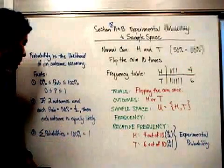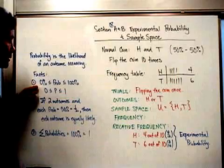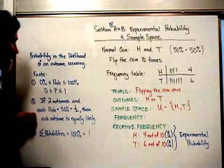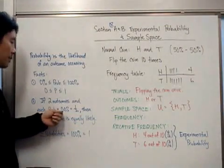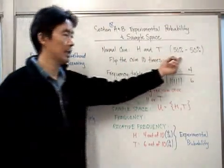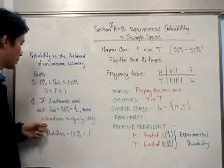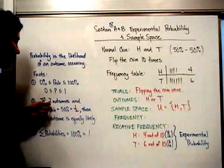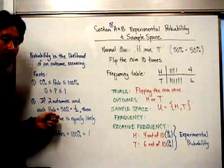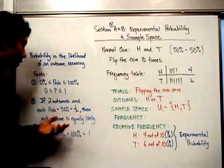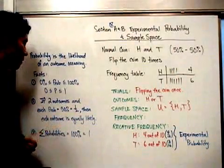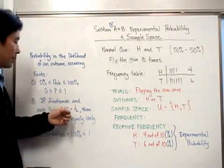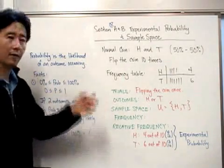So a probability of 100% means it always happens and 0% means it never happens. The second fact: if you have two outcomes and each probability is 50% or one half, then each outcome is equally likely. Similarly, if you have four outcomes each at 25% or one quarter, then again each outcome is equally likely — the probabilities for each outcome are equal.